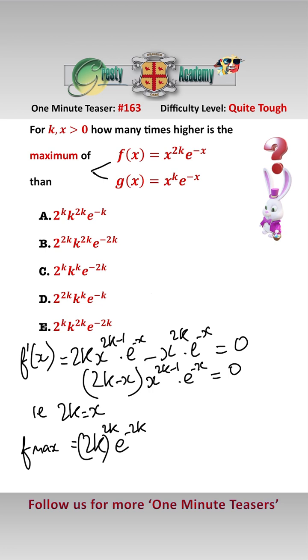G, by exactly the same logic, g'(x) is equal to (k-x) x^(k-1) e^(-x), and that is 0 when k equals x.